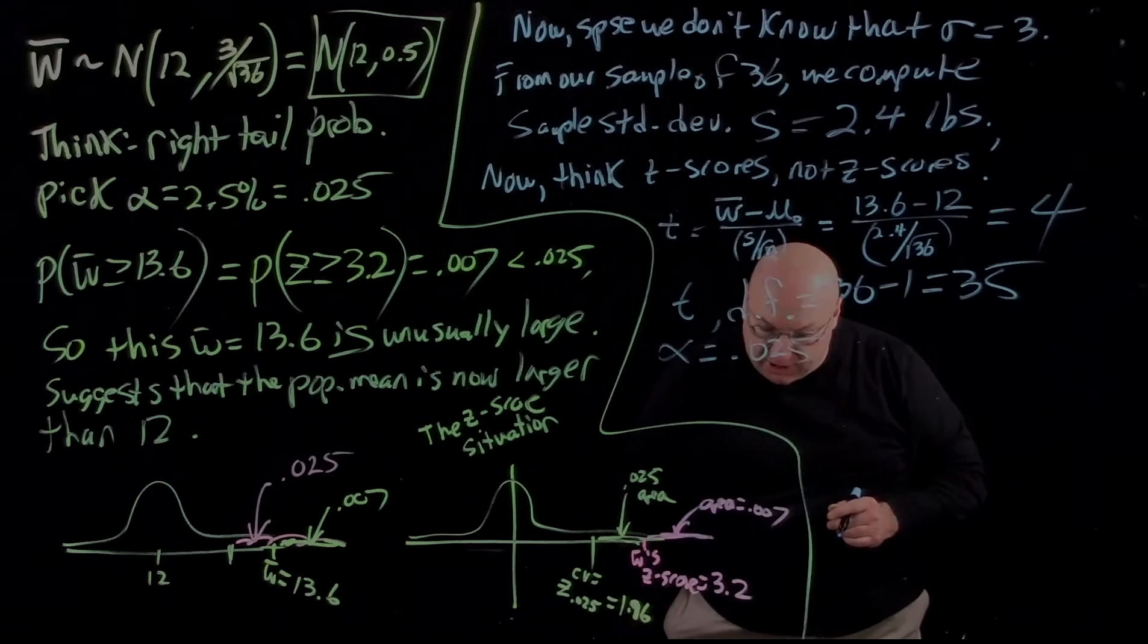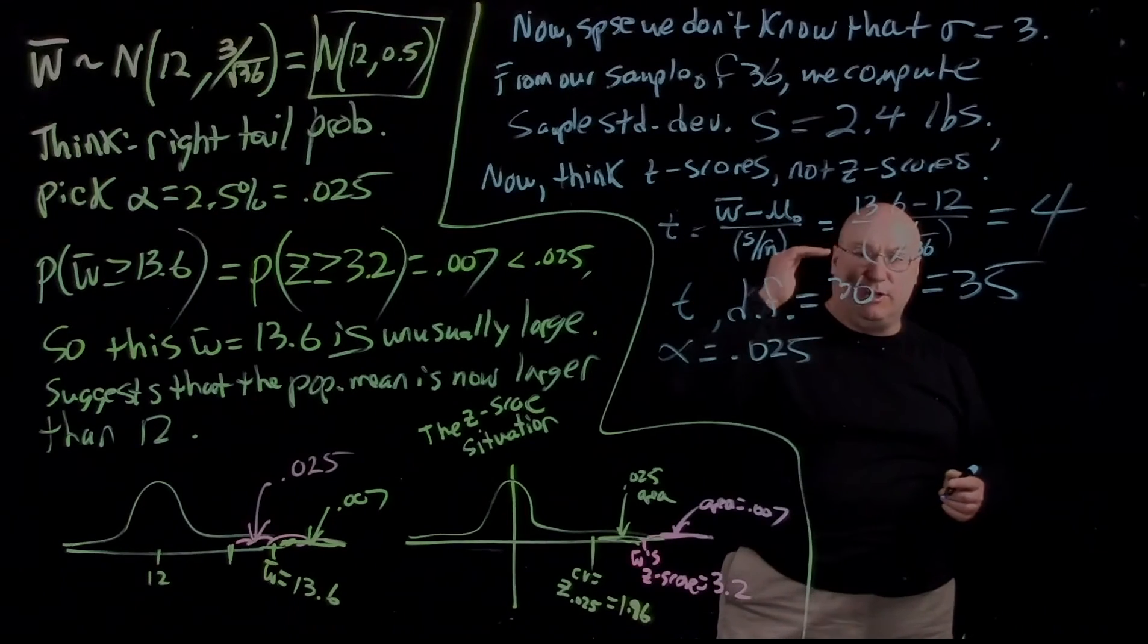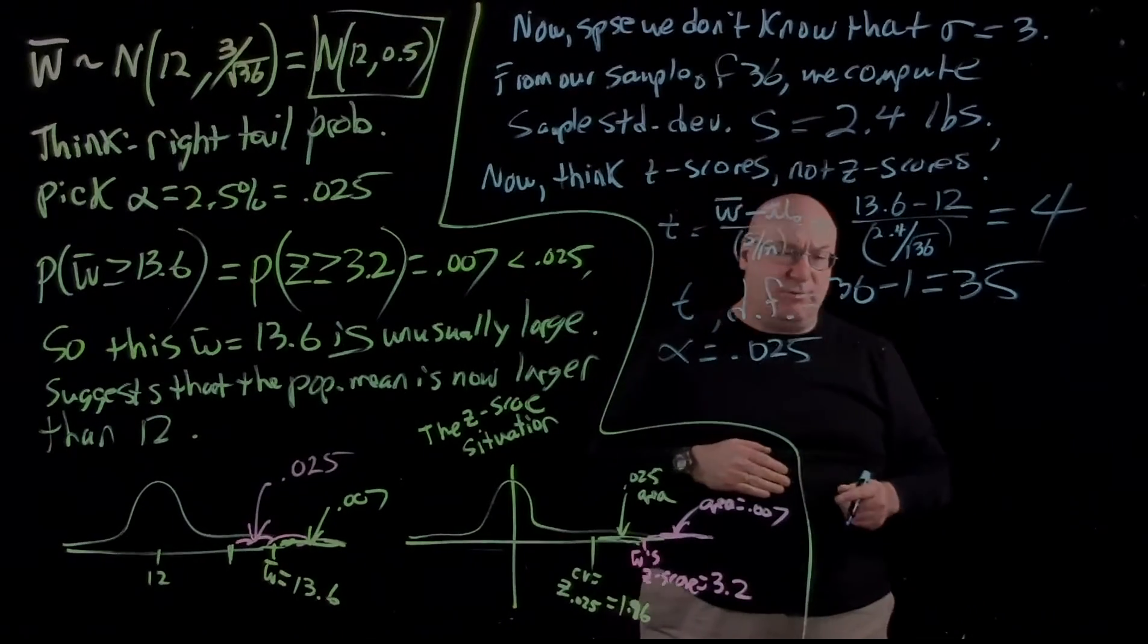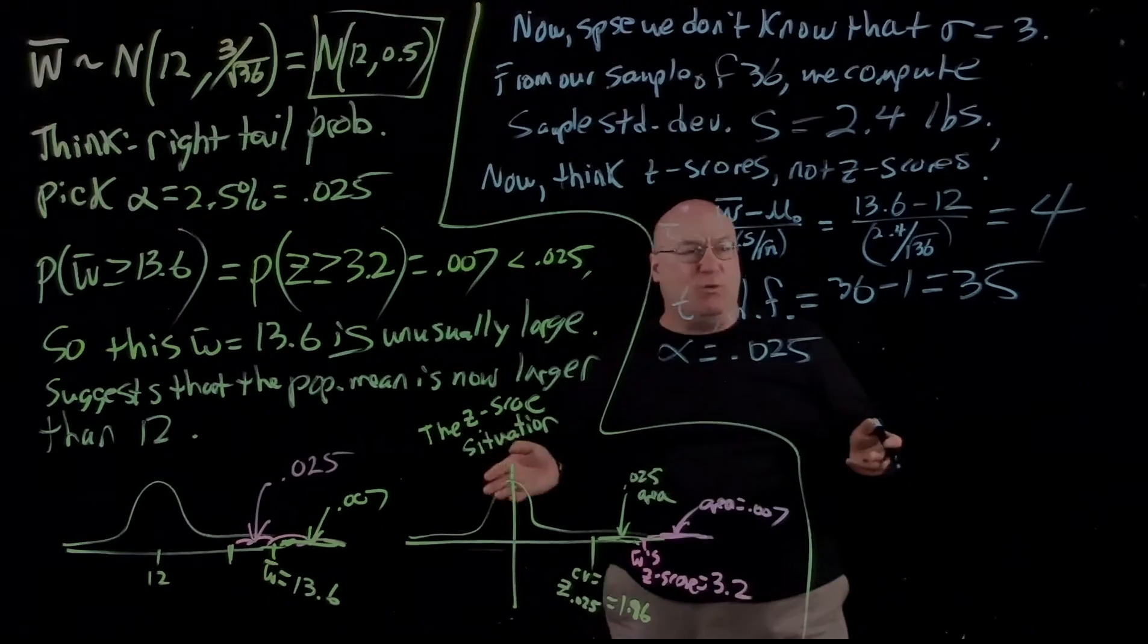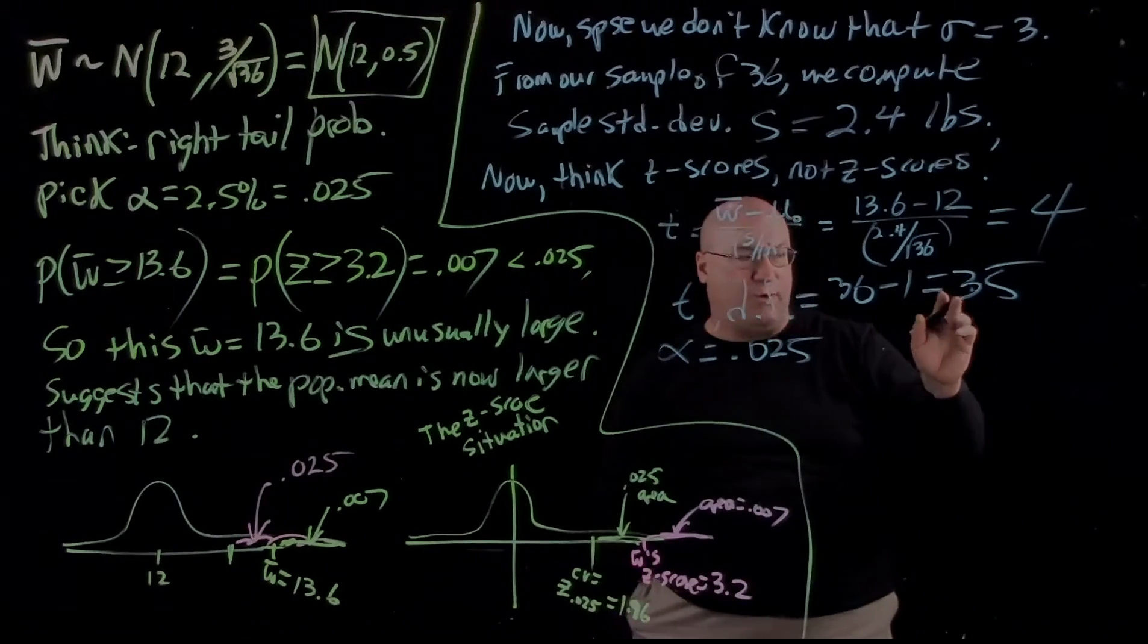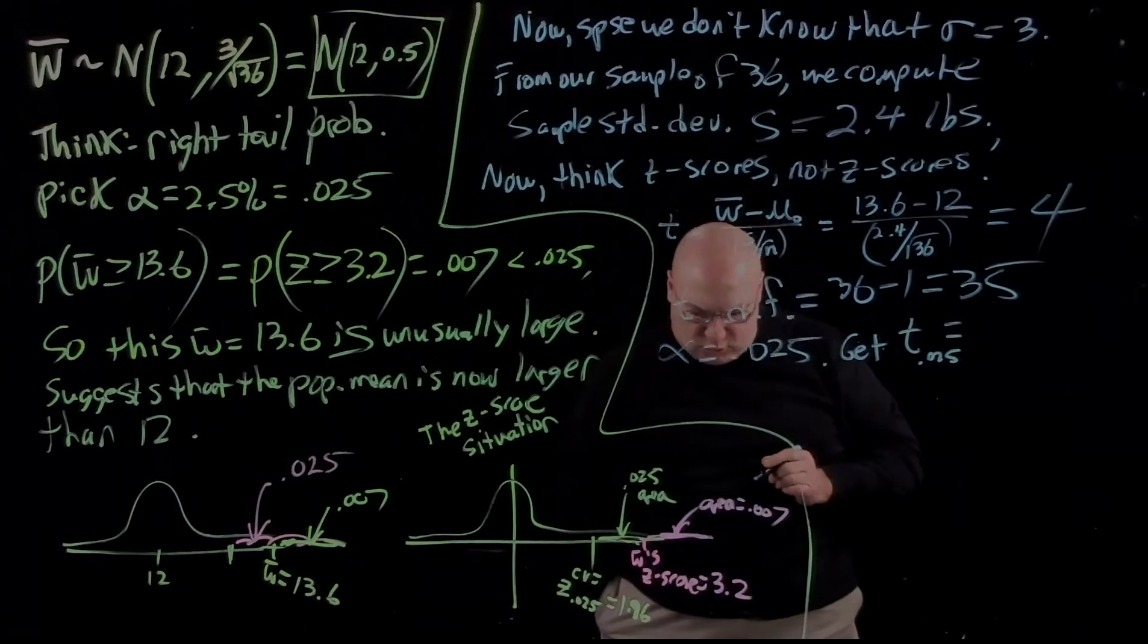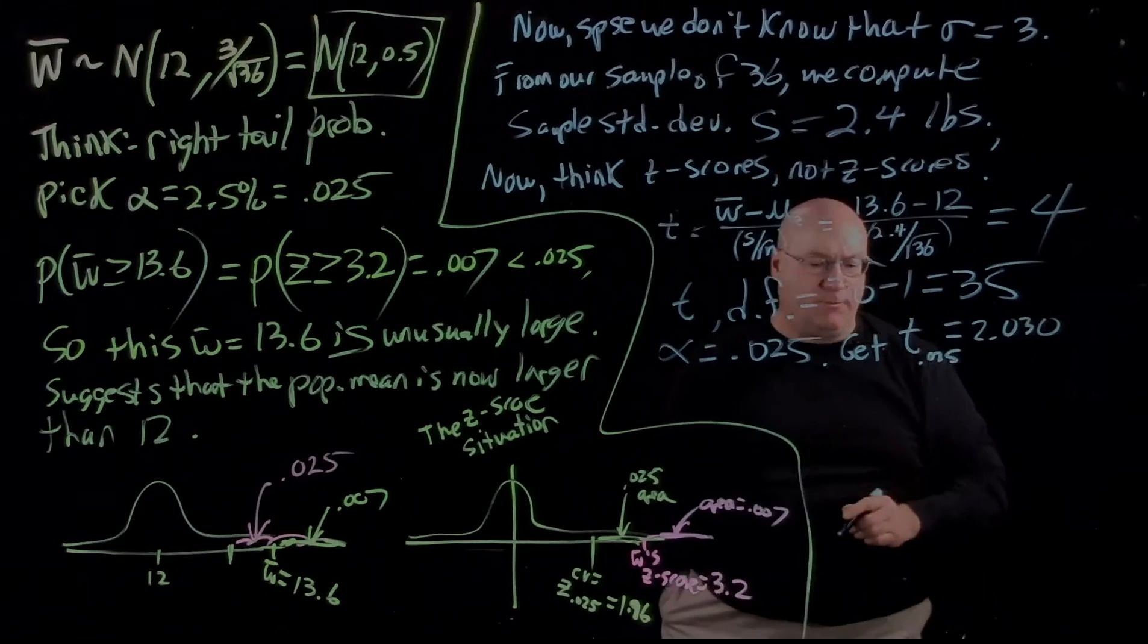So now I go in and look at degrees of freedom equal to 35, and I find area in one tail 0.025. In the table I had up before, I didn't have degrees of freedom equal 35, so I would have had to use either 30 or 40. But I actually went to a different table and got the actual value here for degree of freedom equal to 35. And you should get T sub 0.025 equal to 2.030.